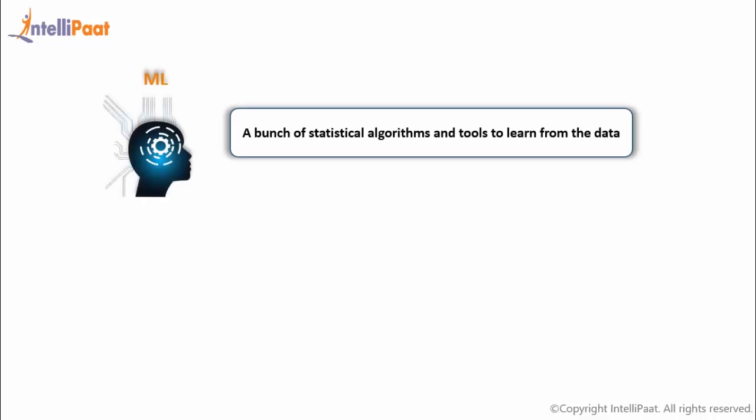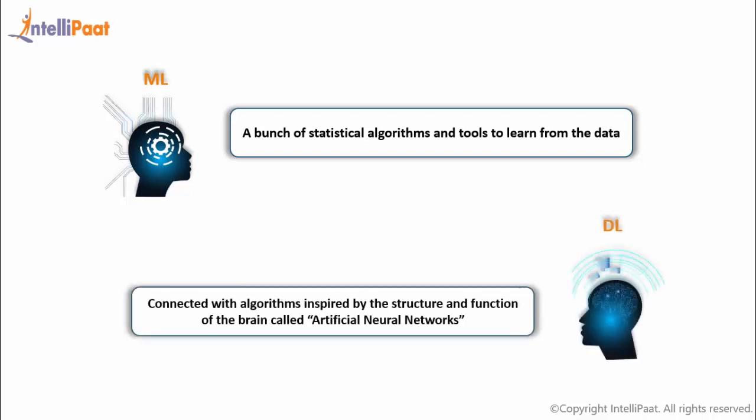Machine learning is nothing but a bunch of statistical algorithms and tools to learn from the data or training data. Machine learning is the science of getting computers to act without being explicitly programmed. On the other hand, deep learning is connected with algorithms inspired by the structure and function of the brain, and we call it artificial neural networks.